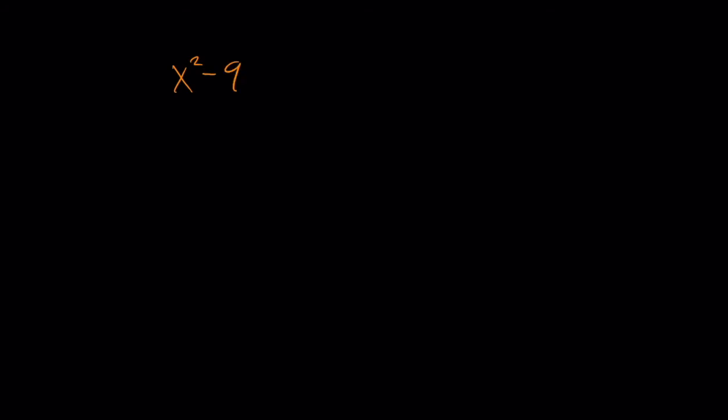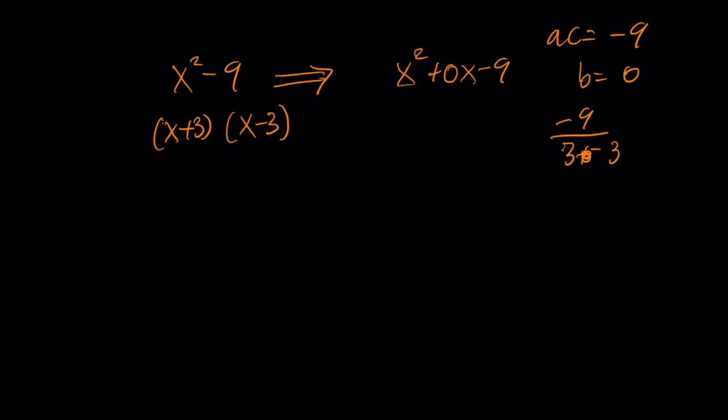So if I have X² minus nine, we know that can factor into X plus three times X minus three. Well, why does this work? This works because if I was to factor this old way, I'm saying what are the factors of AC, which is negative nine, that add up to B, which is zero? Well, some factors of negative nine that add up to zero are three and negative three. So this becomes X² minus 3X plus 3X minus nine. And then you can factor it by grouping. We used our little shortcut for when we've got a leading coefficient of one.